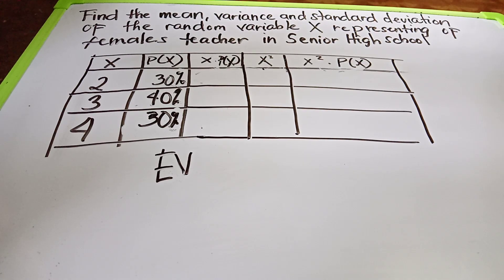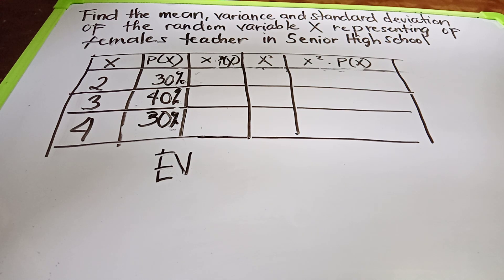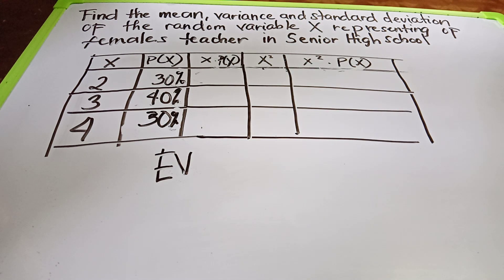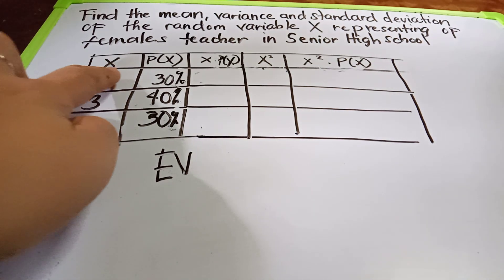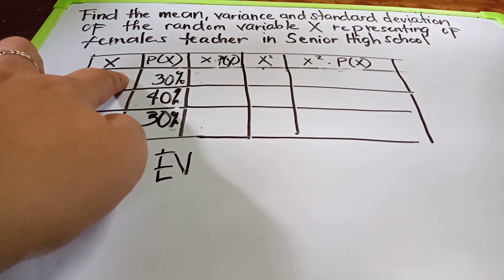Good morning and welcome to my YouTube channel. Here is another example on finding the mean, variance, and standard deviation. The problem asks us to find these values for the random variable X, which represents the number of female teachers in a senior high school. The given values of X are two, three, and four.